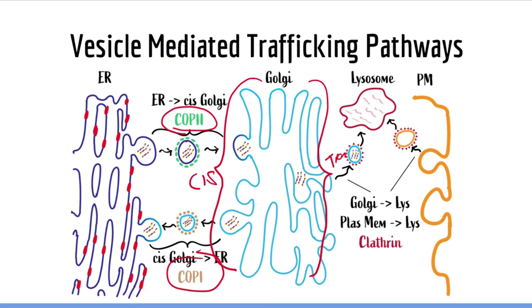Remember, all proteins made in endoplasmic reticulum ribosomes must be transferred to the Golgi before being sent to their final destination. Now let's talk about clathrin-coated vesicles. Clathrin-coated vesicles typically transport proteins from the Golgi to the lysosome as well as material ingested by the cell to the lysosome. They are essentially the gateway to the lysosome. Some types of cells absorb foreign material through a process called endocytosis, and all material absorbed via endocytosis is sent to the lysosome via clathrin-coated vesicles.